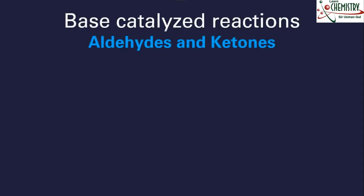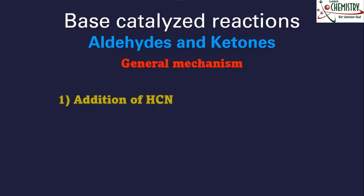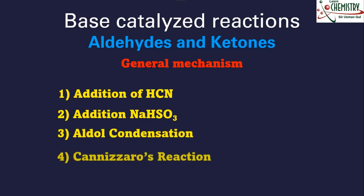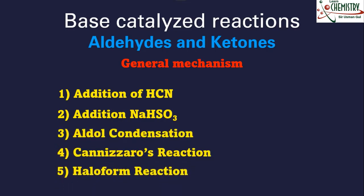In this lesson, I will explain the base-catalyzed reactions of aldehyde and ketone specifically. First I will explain the general mechanism of these types of reactions, and then I will explain five very common reaction types: addition of HCN, addition of sodium bisulfite, aldol condensation, Cannizzaro reaction, and the haloform reaction. I will also explain the mechanism of each type of reaction.